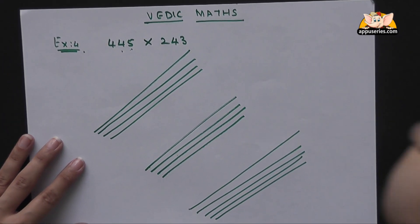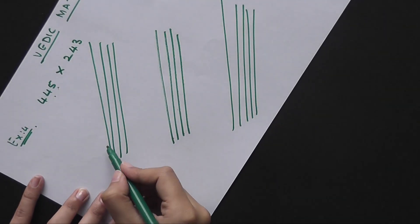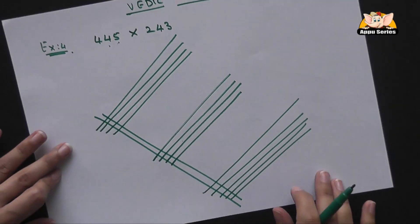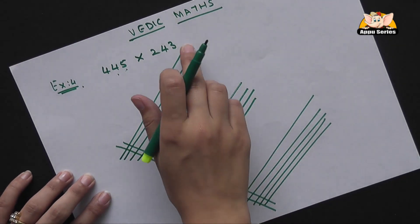Next we have 2, so we'll draw 2 lines here. Then we have 4 and 3, so we'll draw 4 lines here and 3 here.